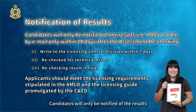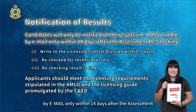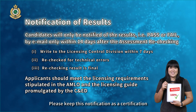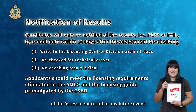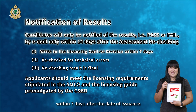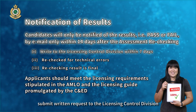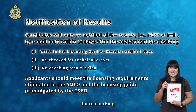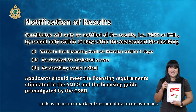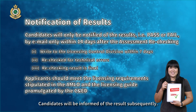Candidates will only be notified of the results — that is, pass or fail — by email within 14 days after the assessment. Please keep this notification as a certification of the assessment result for any future event. Candidates who are not satisfied with their assessment results may, within 7 days after the date of issuance of the result notification, submit a written request to the Licensing Control Division for rechecking. The answer sheet will be rechecked for technical errors such as incorrect marked entries and data inconsistencies, and candidates will be informed of the results subsequently.